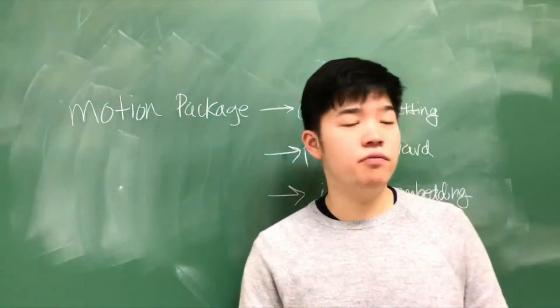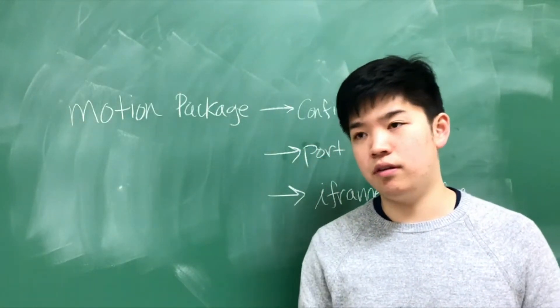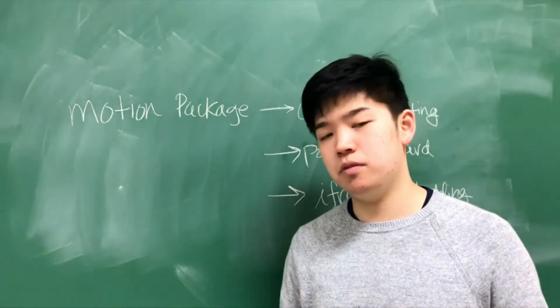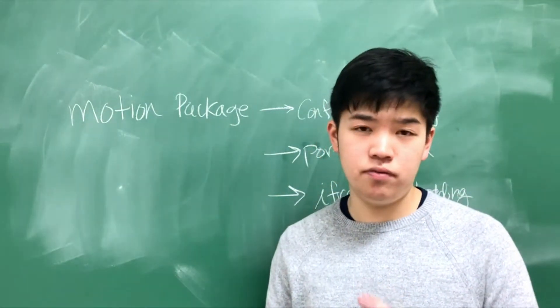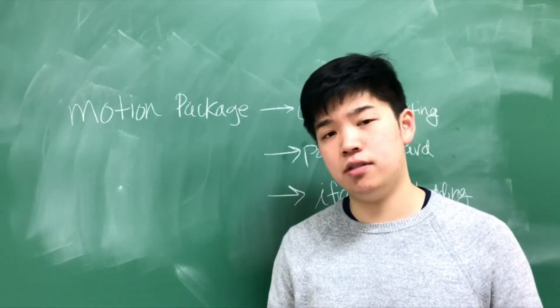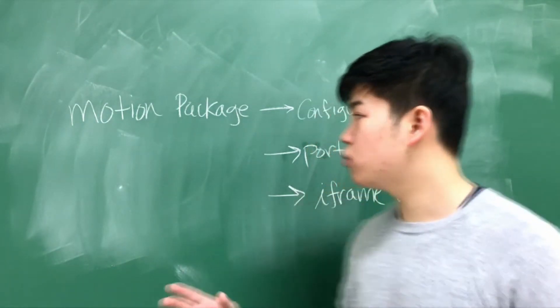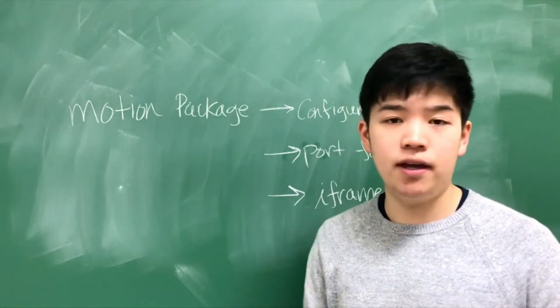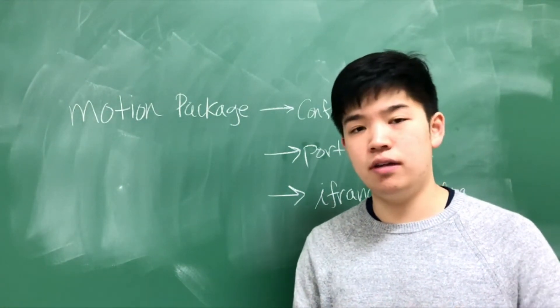We were able to get the video feed that was coming from the front of the car with a few steps. First, we installed the motion package, which is a library built by developers to output the video feed from any webcam connected to the Pi. After that was installed, we had to configure some settings in its configuration file, playing around with the width and height of the video frame rate of the webcam.